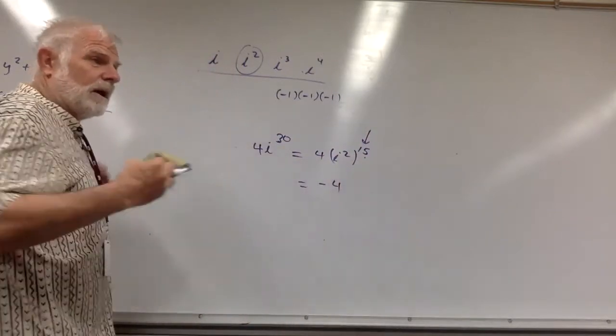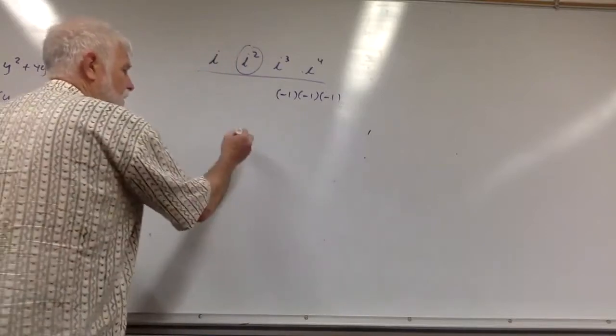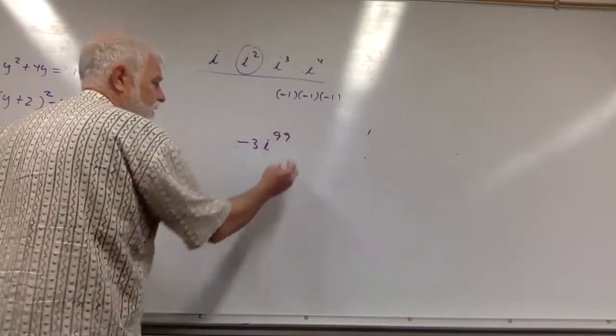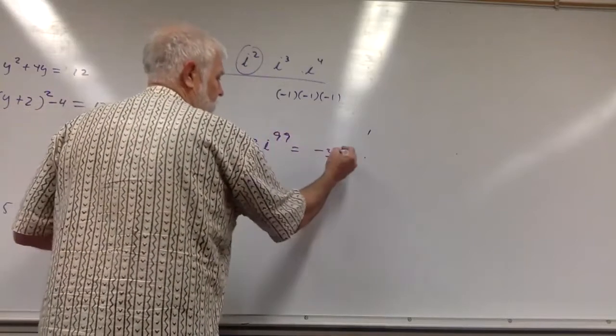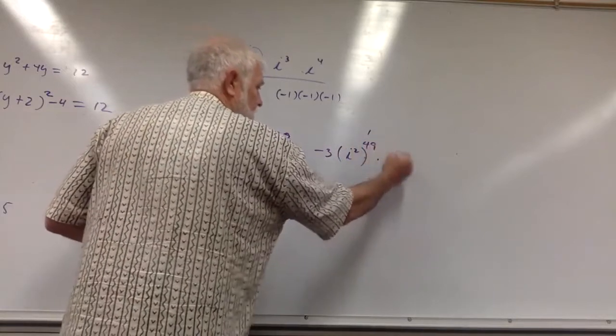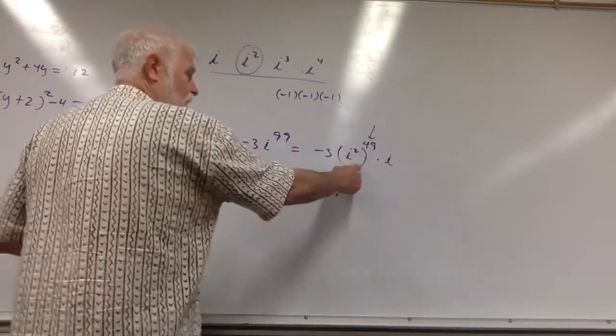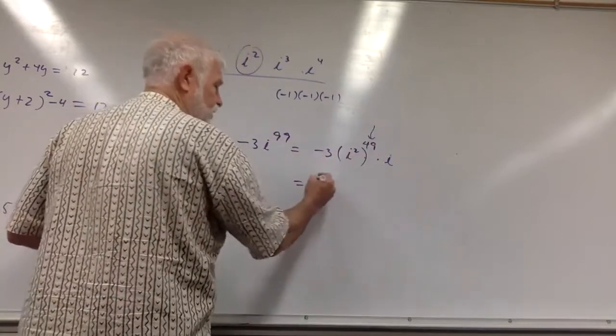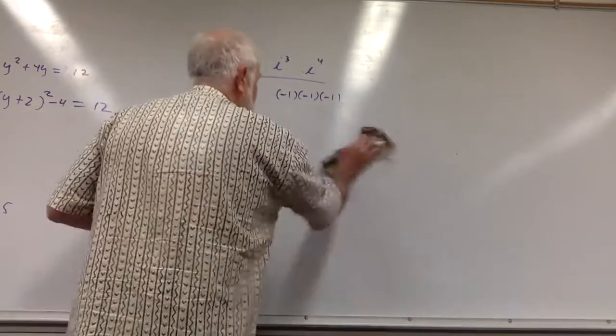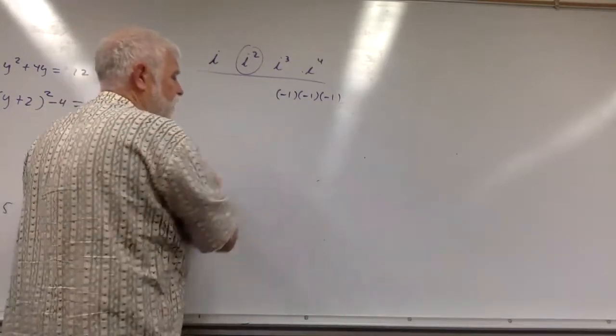You can pause the video, I'm just going to do a bunch in a row. Let's do -3i to the 99th. Well that's equal to -3 × i² forty-nine times × i. Well, that's an odd, so we've got -1 × -3 is positive 3i.